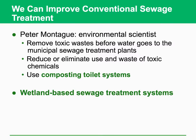If the point source pollution is a problem, we have to improve the wastewater treatment process. We also have to reduce or eliminate the use and waste of toxic chemicals. Sometimes people say the wetland-based wastewater treatment system is effective by using some natural cleanup process. In the future, what we have to consider is the way of working with nature — not only doing artificial measures but also incorporating natural processes.